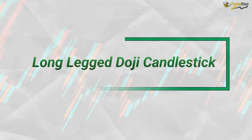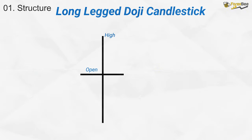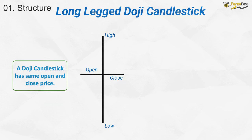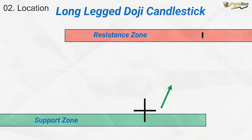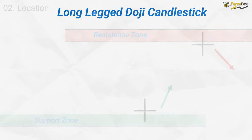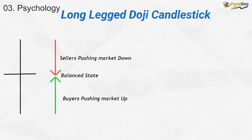Now, let's discuss the long-legged doji candlestick pattern. This pattern occurs when the opening and closing prices are the same, with nearly equal shadows above and below that price level. Its price path reflects a market where prices fluctuate significantly, but ultimately close at the same level as they opened, forming the long-legged doji. A long-legged doji can form at key levels like support and resistance zones. When it appears, it signals market indecision and may suggest a potential trend reversal or continuation.